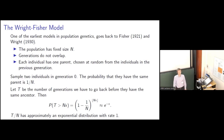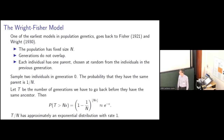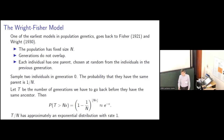The probability that they choose different parents is one minus one over N. So if we let T be the number of generations that we have to go back until these individuals have a common ancestor, the probability that T is greater than N times x is the probability that the two individuals choose different parents N times x generations in a row. So that's one minus one over N to the power N times x, which is approximately e to the minus x. So we see that the distribution of T over N is approximately exponential with rate one.